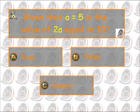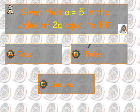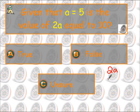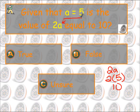So what you're going to do is substitute in. You write your problem down — we have 2a. Remember, when these are right next to each other, it means multiply. So we put 2(5), because a equals 5 — wherever we saw that a, we substituted it in. So 2 times 5 is 10. Their question was: given that a equals 5, is the value of 2a equal to 10? It is equal to 10, so our answer there would be true.